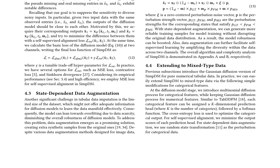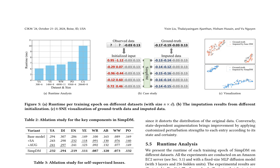The self-supervised alignment mechanism minimizes the difference between the outputs of the two channels with a self-supervised alignment loss. Additionally, SIMP-DM employs a state-dependent data augmentation strategy, which perturbs entries in different states with varying strengths, generating more reliable training samples and boosting robustness. SIMP-DM is extended to handle mixed-type data by introducing multinomial diffusion processes for categorical features and using random-state transformation as perturbation.